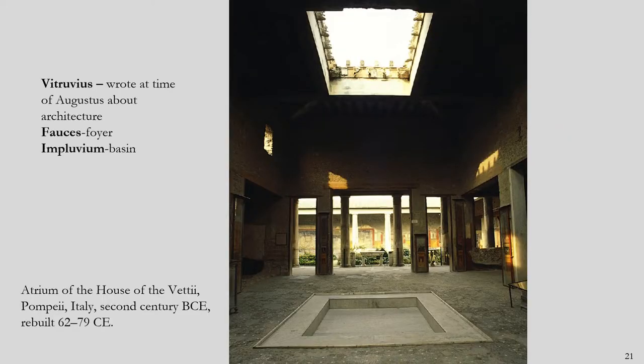This is the interior of the fauces, the foyer as you walk into the home. We can see the impluvium basin at the bottom with the opening in the ceiling allowing for rainwater. We know a lot about these homes because of a Roman writer named Vitruvius — a name we'll see again when we look at buildings of the imperial period and one that crops up through the rest of the history of art, including when we explore the Renaissance. He was an architectural theorist with ideas about the most efficient kinds of homes, buildings, and temples, and a lot of his ideas about the efficiency of design have survived to this day.